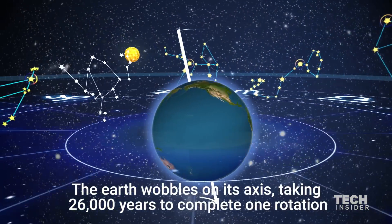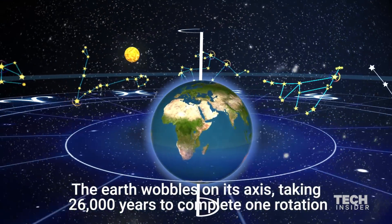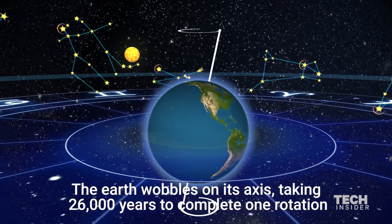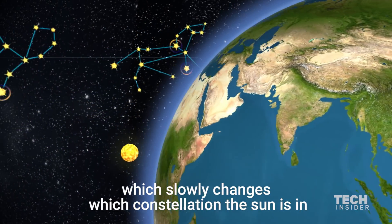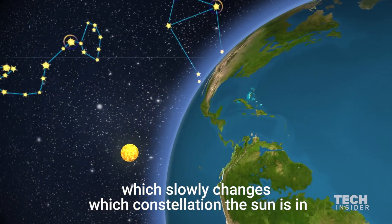The Earth wobbles on its axis, taking 26,000 years to complete one rotation, which slowly changes which constellations the Sun is in.